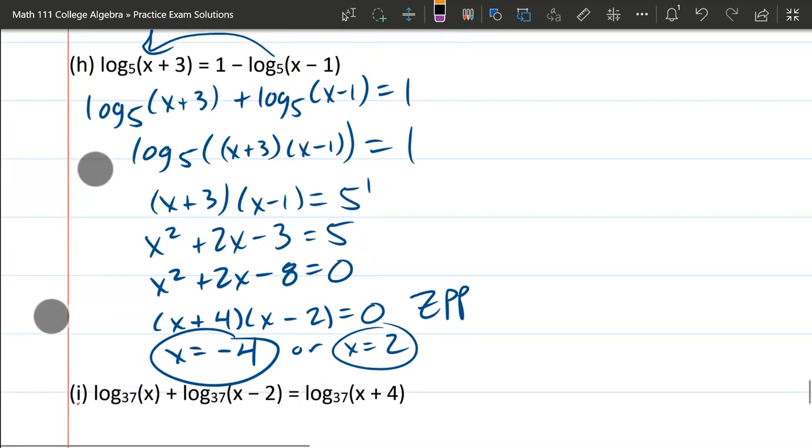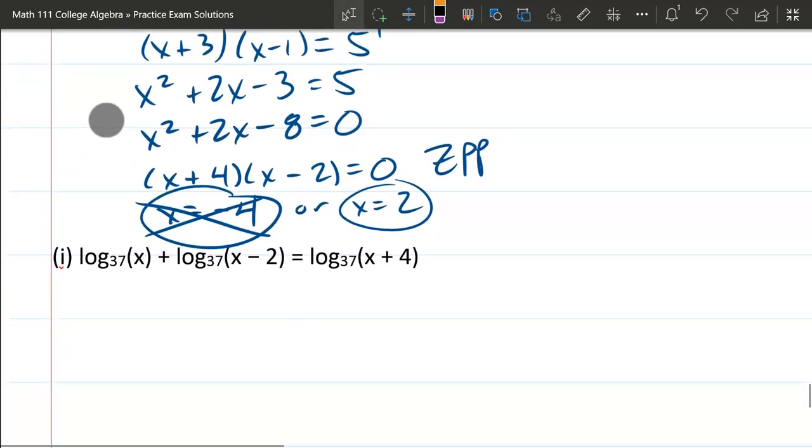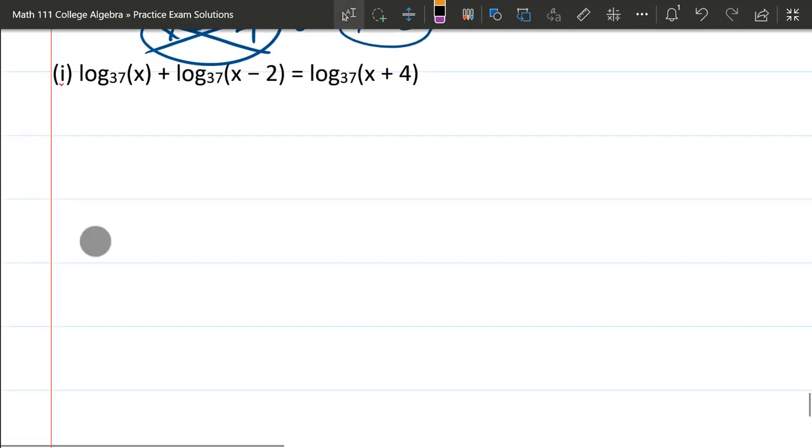However, this one started out being a log. And if we think about negative 4, when you plug it into here, you're going to get negative 4 plus 3 is negative. Your domain for your logs has to be positive. So that means negative 4 is out. Positive 2. Positive 2 plus 3 is 5. No problem. Positive 2 minus 1 over here works out also because 2 minus 1 is 1. So there's our only answer for that. So we're going to part I here. This actually looks very similar.